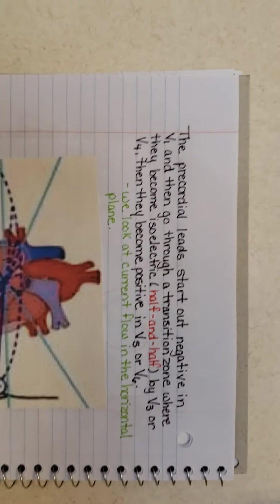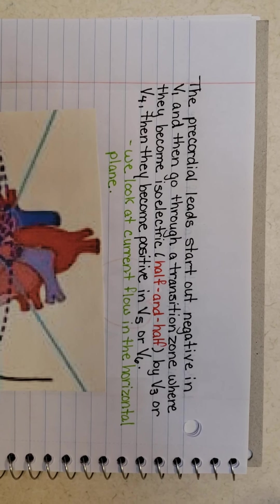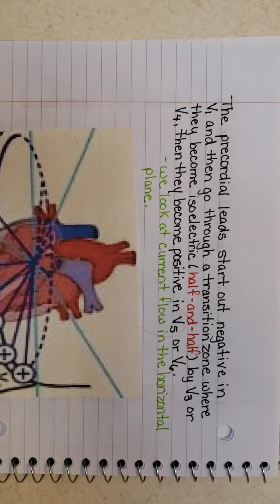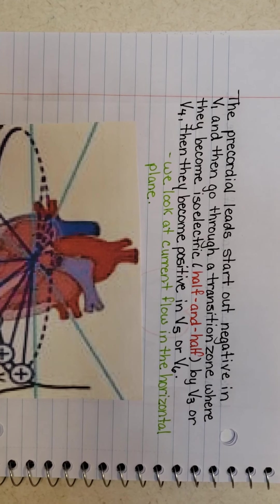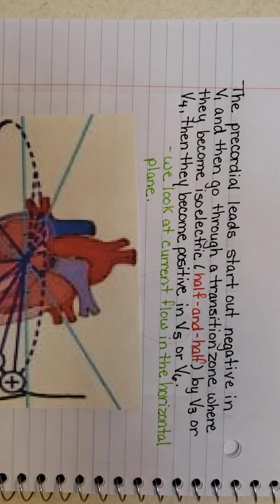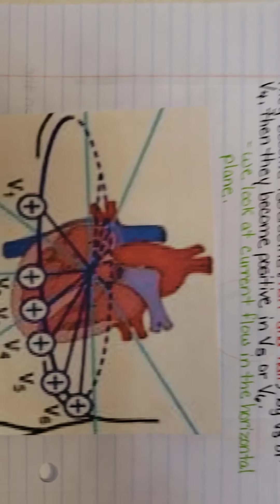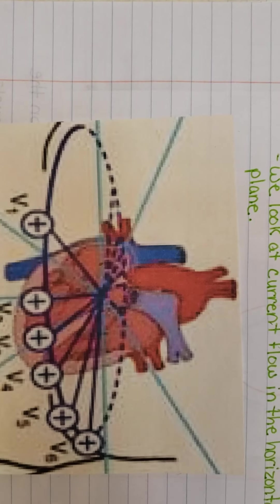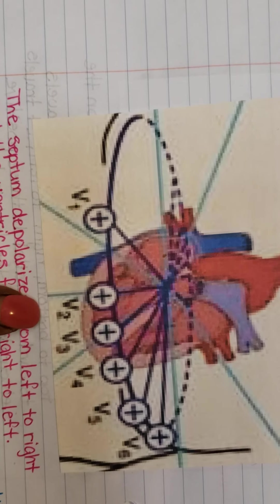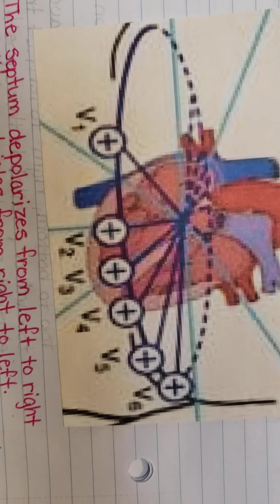So, let's talk about the precordial leads. The precordial leads start out negative in V1 and then go through what we call a transition zone, where they become isoelectric half and half by V3 or V4, then they become positive in V5 or V6. We look at current flow in the horizontal way. So, if we take V1, we're looking at it this way in V2, V3, V4, V5, V6.